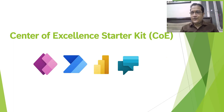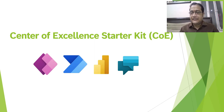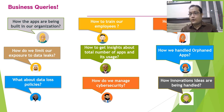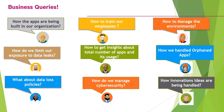In this video I will be talking about what is Center of Excellence Starter Kit, which in short form we say COE Starter Kit. This is a very important topic to understand because we generally get many business queries from different departments of our organization — for example, how to manage different environments in our platform, how to train employees, how apps are being built, are there any specific standards or guidelines, what about cybersecurity, what about DLP policies, how to handle orphaned apps, how to limit the exposure of our data, and how innovation ideas can be handled.